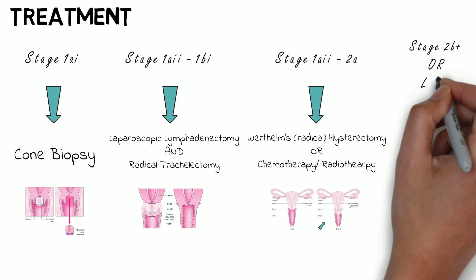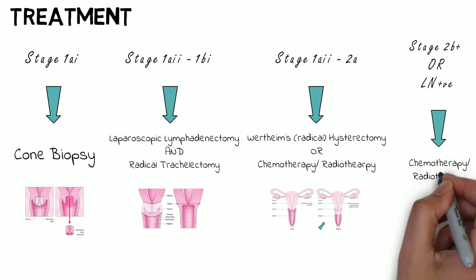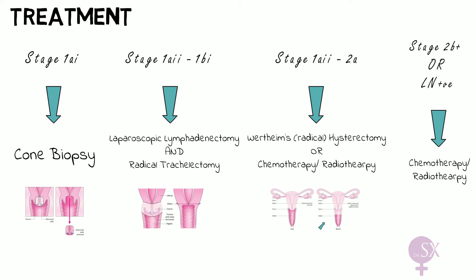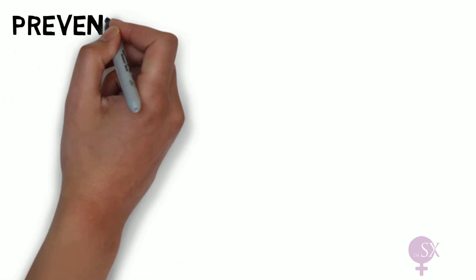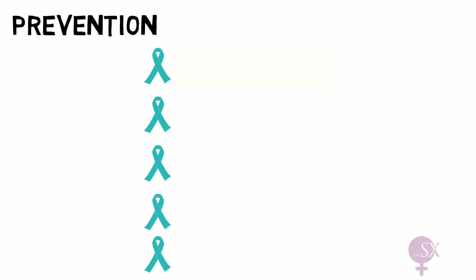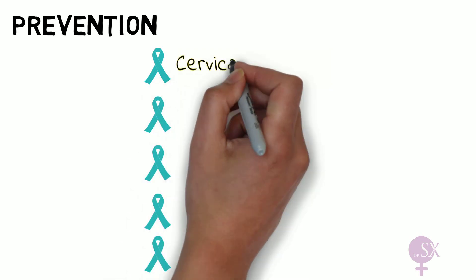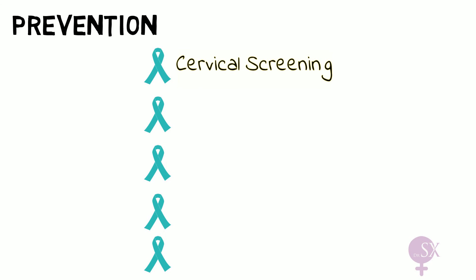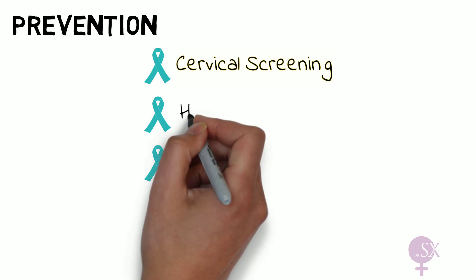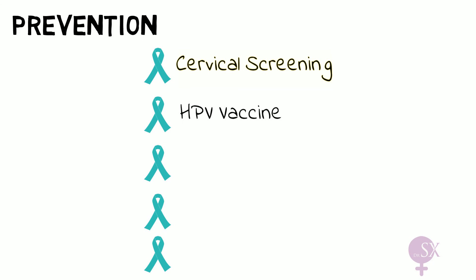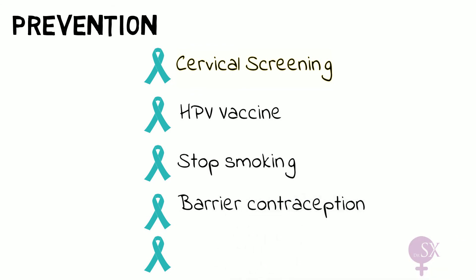If the stage is 2b or more, the cancer is no longer amenable to surgery and the patient undergoes chemoradiotherapy. Regarding prevention: cervical cancer screening is the most important measure — early detection and treatment can prevent cancer developing in 75% of cases. The HPV vaccine prevents acquisition of the most common cause of cervical cancer. Other preventive measures include stopping smoking, using barrier contraception, and leading a healthy lifestyle.